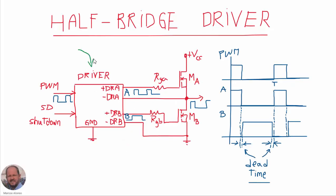We want to create this driver to drive a half-bridge inverter. Here we have both transistors, transistor A and transistor B. We have this PWM input in which when this input is equal to 1, this means that we want to activate the top transistor, transistor A. And when the PWM input is equal to 0, then this means that we want to activate transistor B.